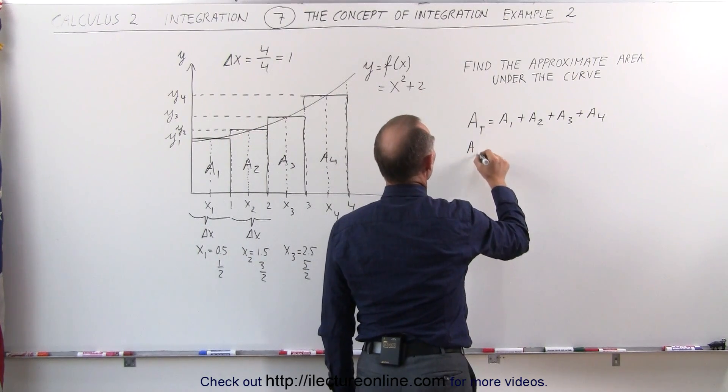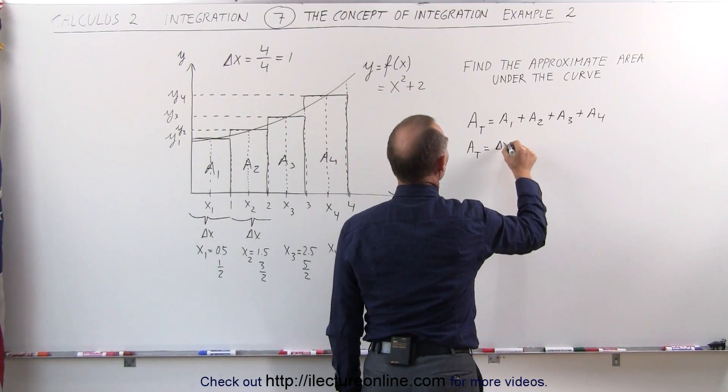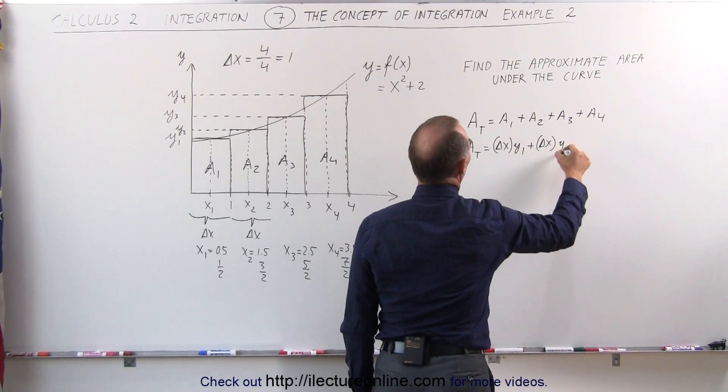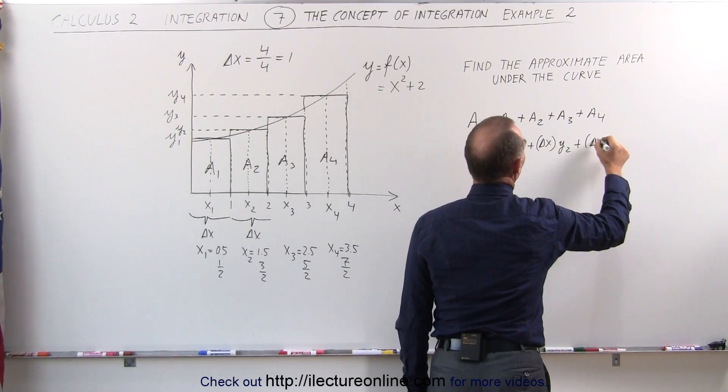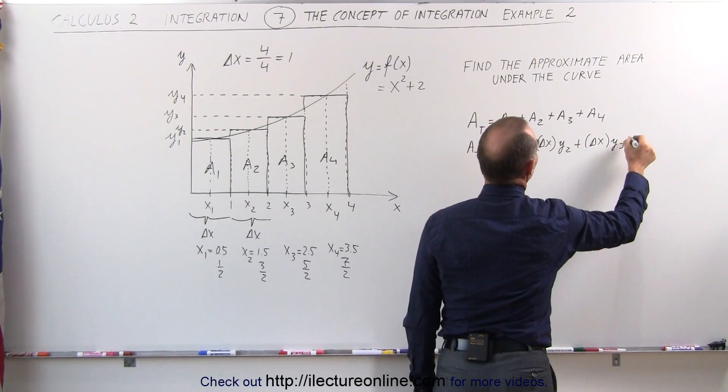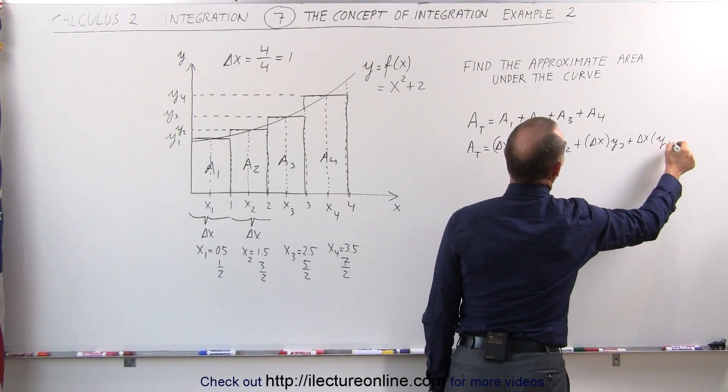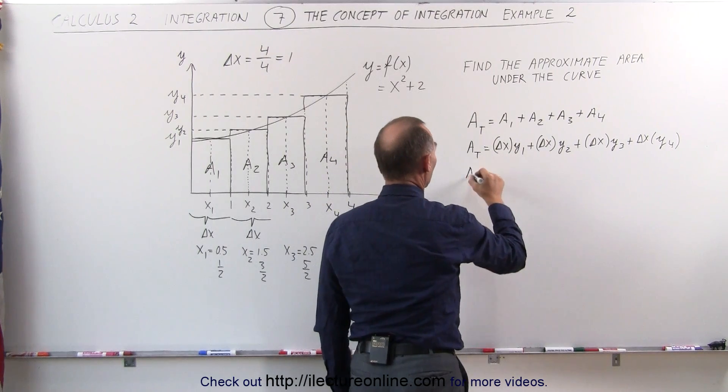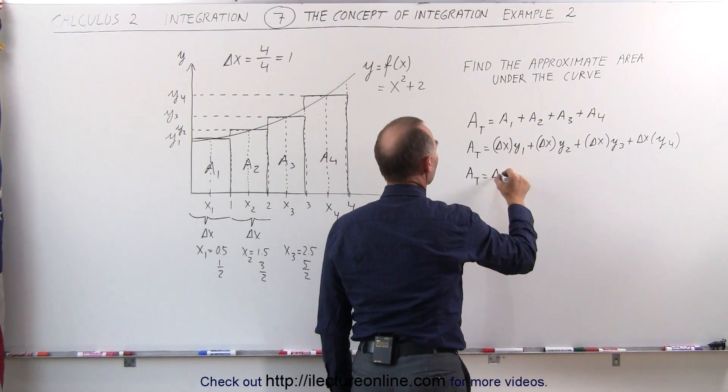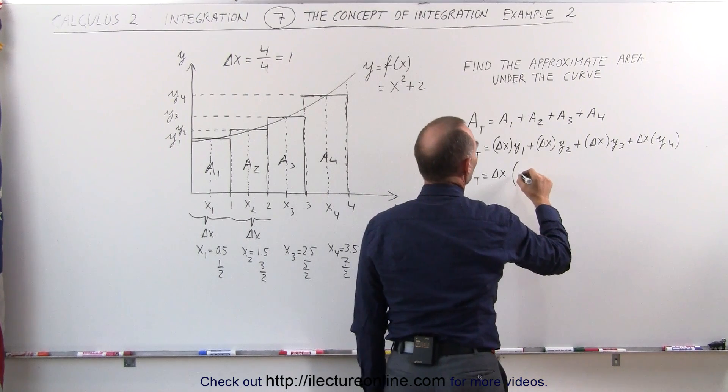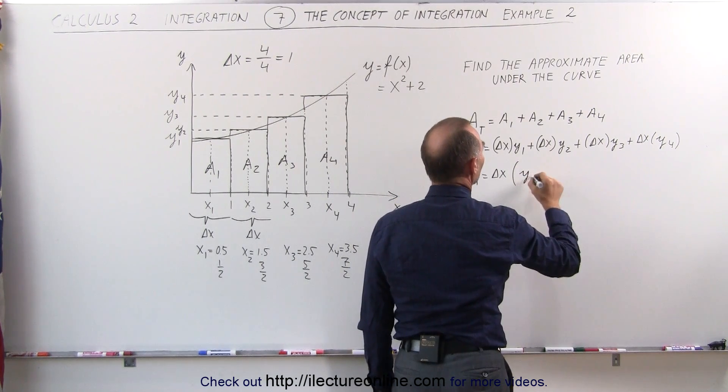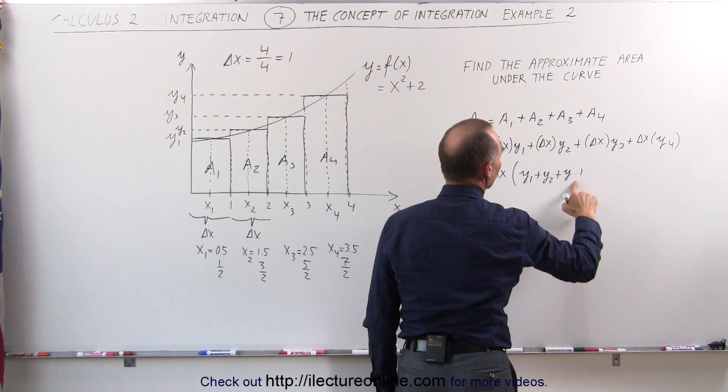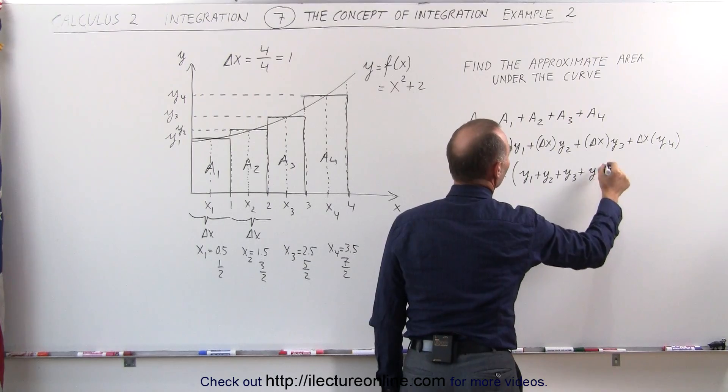Area total will be equal to the area of the first rectangle, which is delta x times y sub 1, plus delta x times y sub 2, plus delta x times y sub 3, plus delta x times y sub 4. And we can factor out the delta x here, so we can write that the total area will be equal to delta x, the width of each rectangle, multiply times the sum of all the heights of all the four rectangles, y1 plus y2 plus y3 plus y sub 4.